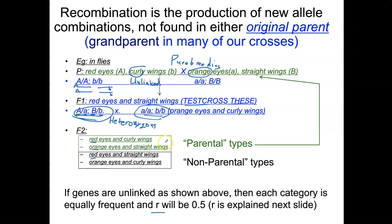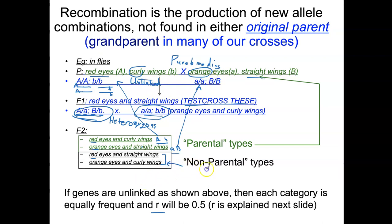So we have four categories. Big A with small b, or small a with big B — these are the parental types, because they match the original parents: orange eyes with straight wings, and red eyes with curly wings. But there are two other combinations not like the parents: red eyes with straight wings, and curly wings with orange eyes. These are called the non-parental types, and they're the result of independent assortment.